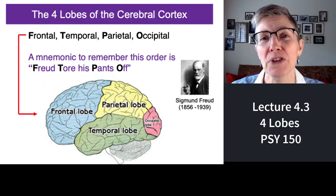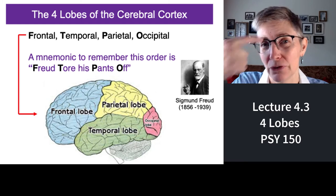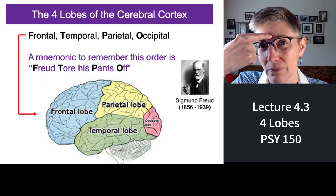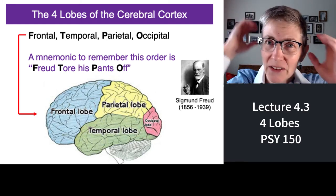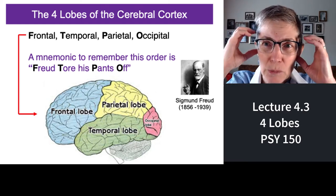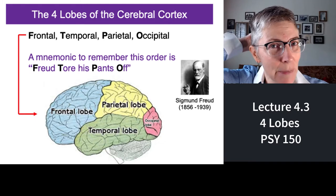Hello and welcome to lecture 4.3. What we're going to talk about in this mini lecture is the four lobes of the cerebral cortex, or that brain bark on the outside of your brain. The four lobes are called the frontal lobe, parietal lobe, the temporal lobe, and the occipital lobe.